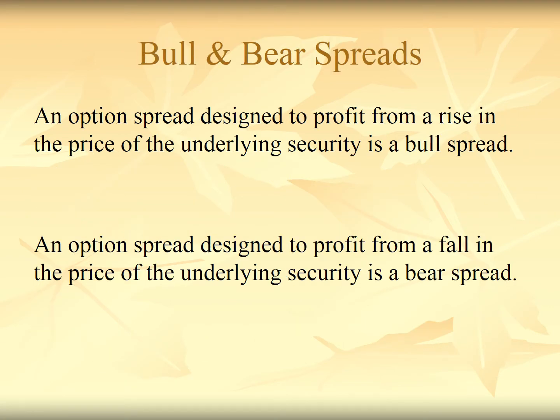A bull spread is designed by keeping in mind the profit to be earned from a rise in the price — that is, when we are bullish, behaving like a bull. That is known as a bull spread. Whereas when we create a spread with the purpose of earning profit from a fall in the price of the underlying asset or security, that is known as a bear spread.